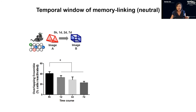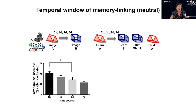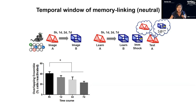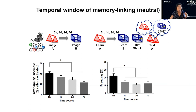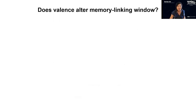Similar to what we previously published, two contexts separated by five hours have higher ensemble overlap, which decreases by the next day. For the behavioral linking time course, animals saw two contexts separated by the same time intervals, then were brought back two days later and given a shock to update the memory. We tested them in the neutral context and asked whether they transferred the fear. At five hours the animals linked, but not if separated by a day or more.